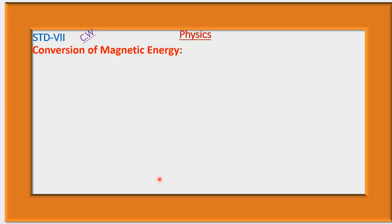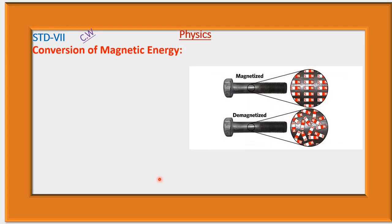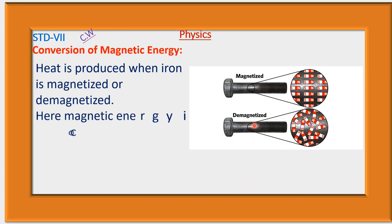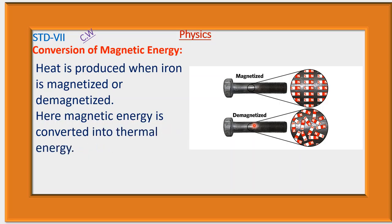Now, conversion of magnetic energy. When iron is magnetized or demagnetized, heat is produced. Here, magnetic energy is converted into thermal energy.